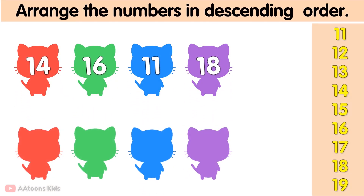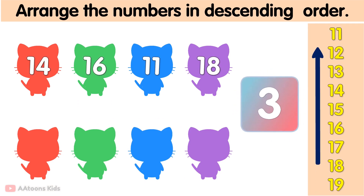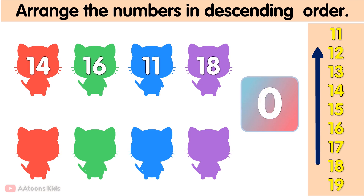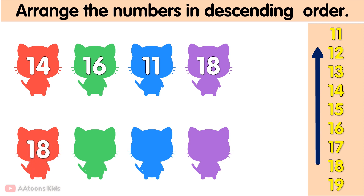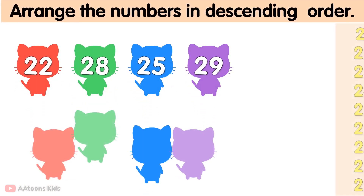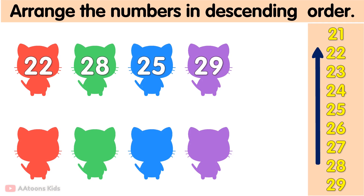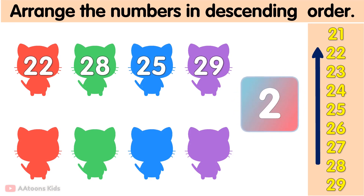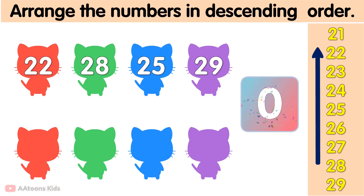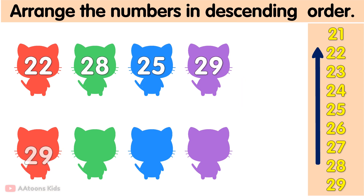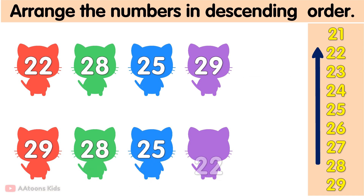Arrange the following numbers in descending order: 18, 16, 14, 11. Arrange the following numbers in descending order: 29, 28, 25, 22.